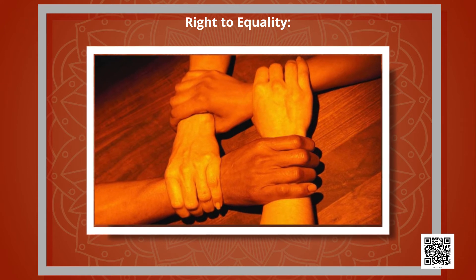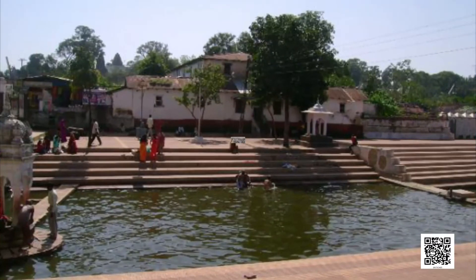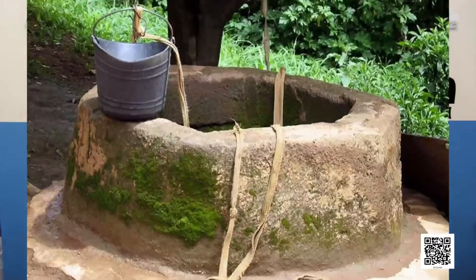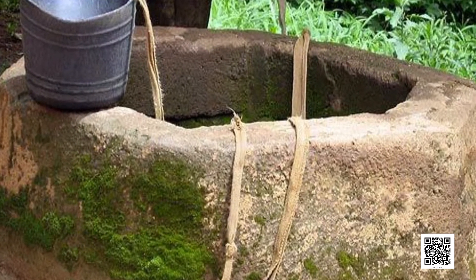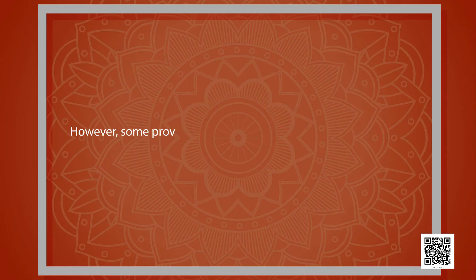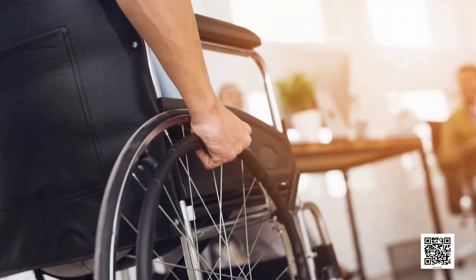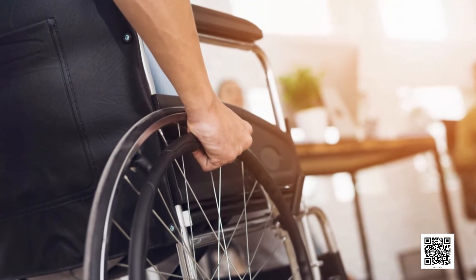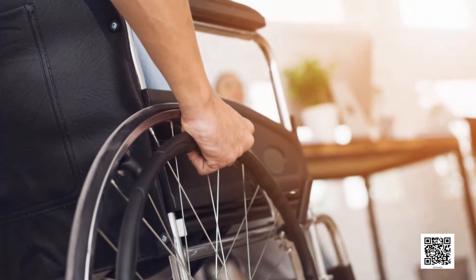Every citizen has equal access to public places and public facilities like temples, bathing ghats, roads, public toilets, community wells, etc. Every person gets equal opportunity to compete for public jobs like civil services, defense services, etc. However, some provisions have been made to give special preference to people from SCs, STs, women, and OBCs. Similarly, the physically disabled are also given reservation in government jobs. All these things are done to uplift these social groups.